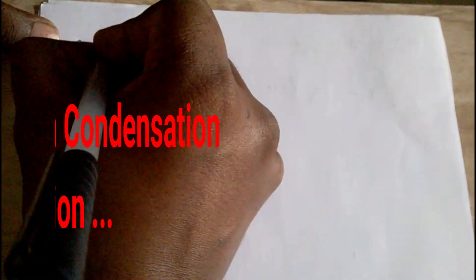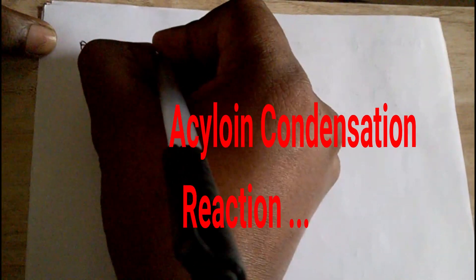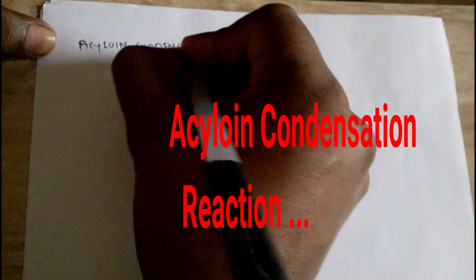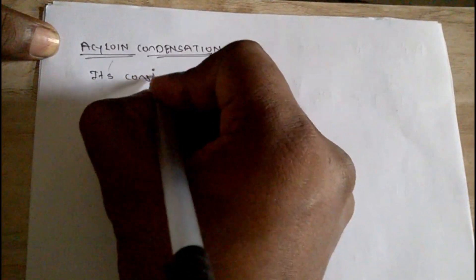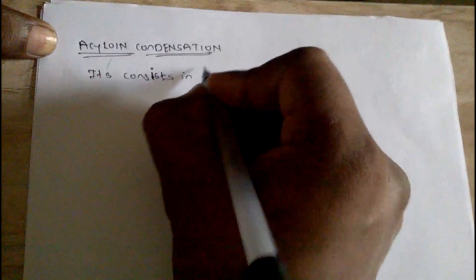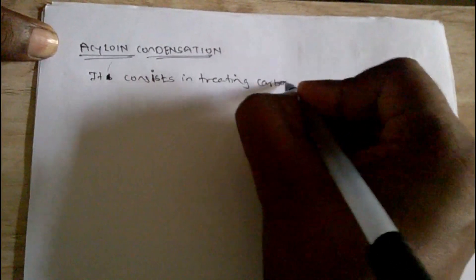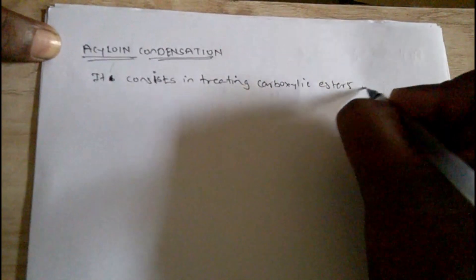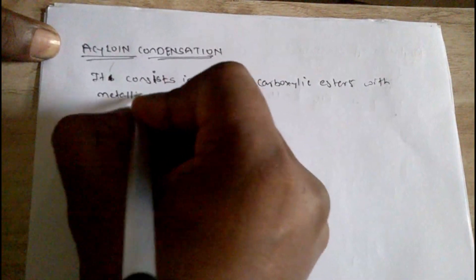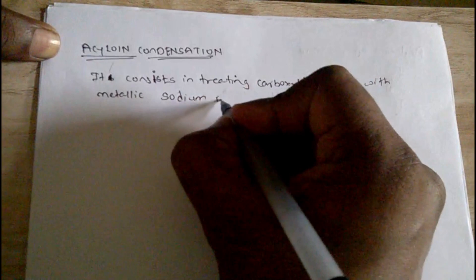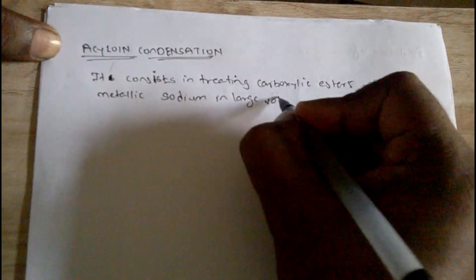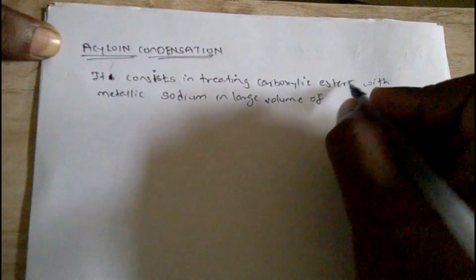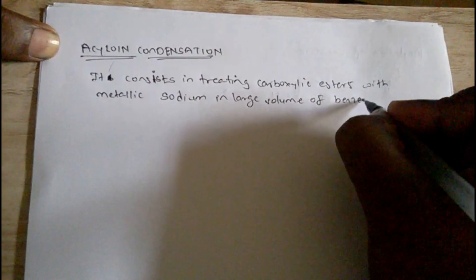Hey guys, today we are going to see the Acyloin condensation. It consists in treating a carboxylic ester with metallic sodium in a large amount, or a large volume of solvent, in benzene or toluene.